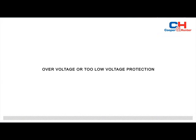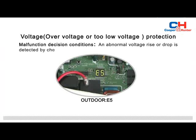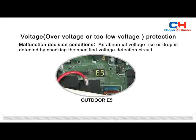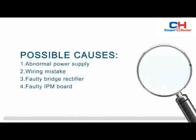Over voltage or too low voltage protection: a malfunction condition where an abnormal voltage rise or drop is detected by checking the specified voltage detection circuit. The failure may be caused by abnormal power supply, wiring mistakes, faulty bridge rectifier, or a faulty IPM board.